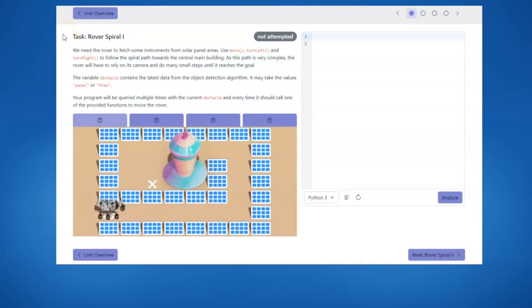For this task, we will use what we've learned about sensing and decision making while trying to navigate a robot through a maze. For sensing, we will use the obstacle variable. If it reads panel, there's something in the way. If it reads free, the path is clear. Then we will make a decision based on the sensor's input.